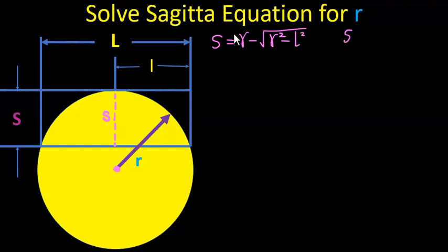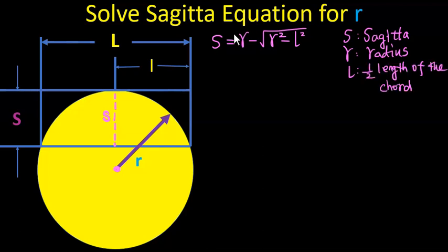Here s represents the Sagitta, r represents the radius, and l represents half length of the chord. Let's solve for r.